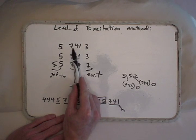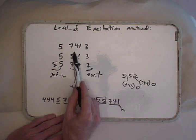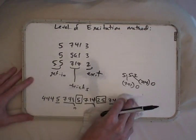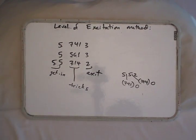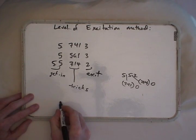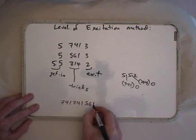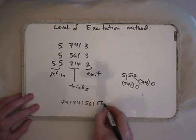Which means that if you're in 741, you don't need to do anything to get into 561 because the level of excitation is identical. If you happen to be running 741 over and over again, you can just do 561 any number of times.